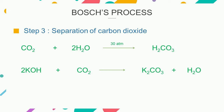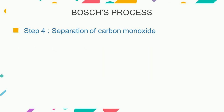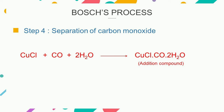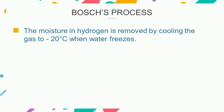The hydrogen gas thus obtained may still contain unreacted carbon monoxide. The mixture is then passed through ammoniacal cuprous chloride solution in order to remove the uncombined or unreacted carbon monoxide. Then, the moisture in hydrogen is removed by cooling the gas to minus 20 degrees Celsius, at which point water freezes and hydrogen remains in a gaseous state.